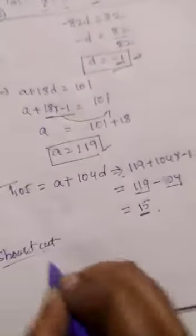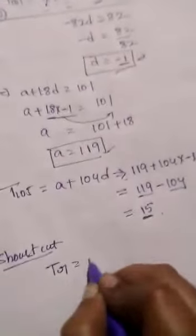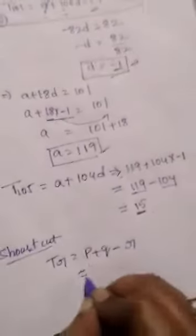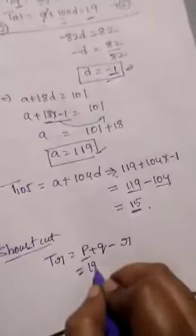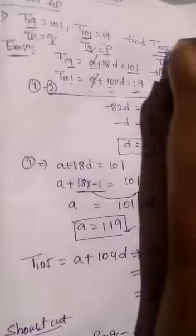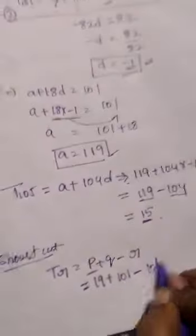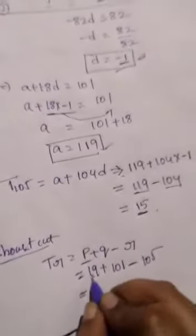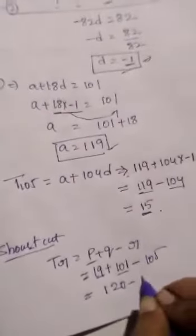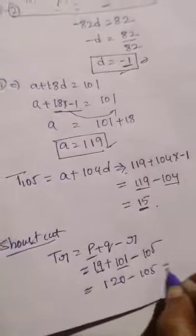Shortcut is TR equal to P plus Q minus R. Here what is P? P is 19 plus Q, Q is 101, R is 105. So 19 plus 101, 120 minus 105. So answer is 15.